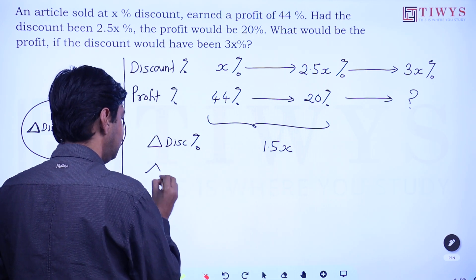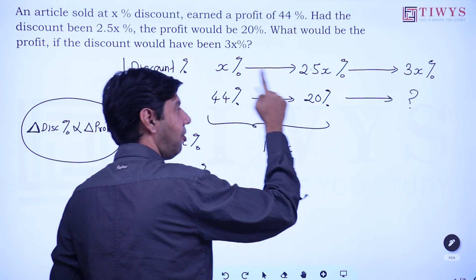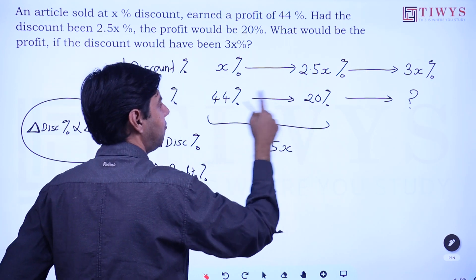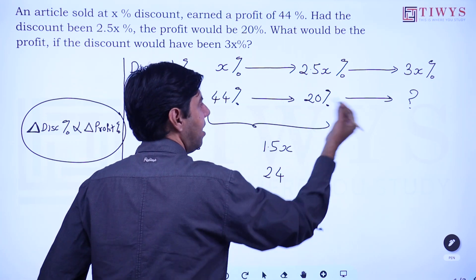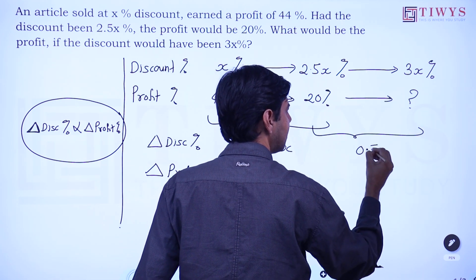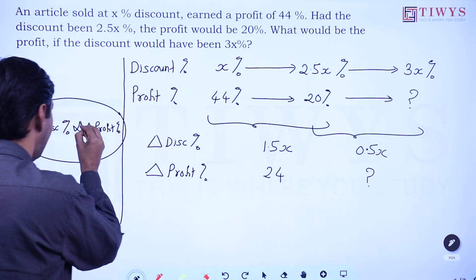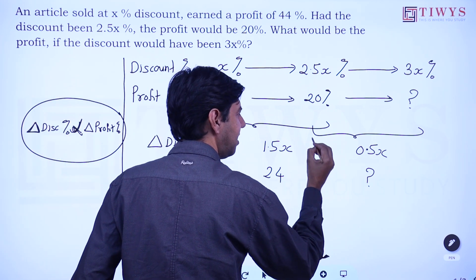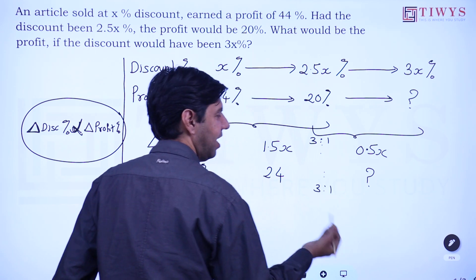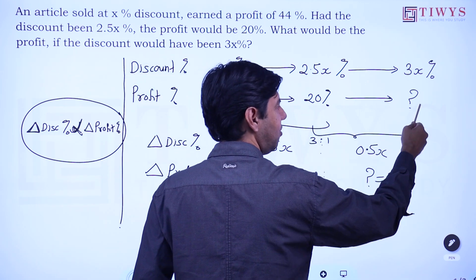The change in profit percentage is 44 minus 20, which is 24. From the second to the third case, the change in discount is 0.5x. Since they are directly proportional, the ratio is 3:1, so the ratio of profit change will also be 3:1, giving a change of 8 percent.